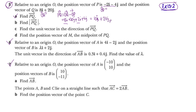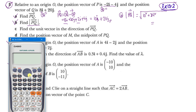For question B, find |PQ|, the modulus. The length is the square root of the sum of squared coefficients of i and j. So we write root of 10 squared plus 24 squared. Using a calculator, root of 10 squared plus 24 squared equals 26. This is our modulus.